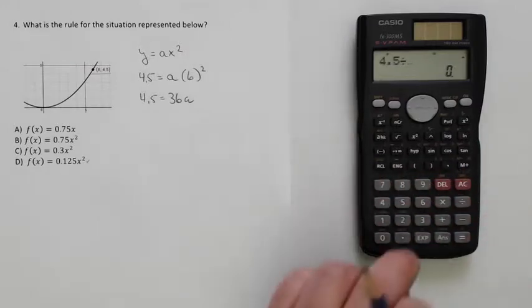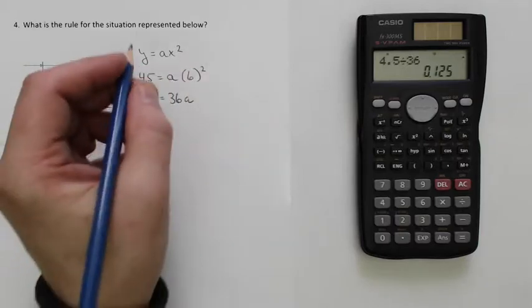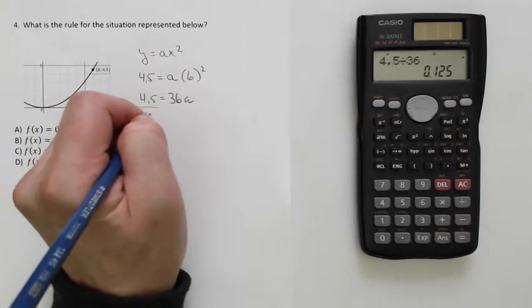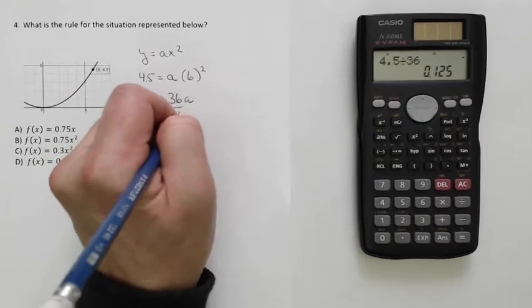So 4.5 divided by 36, and that gives me 0.125 for my a.